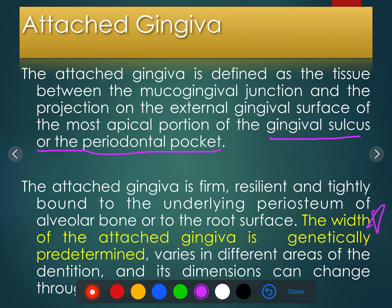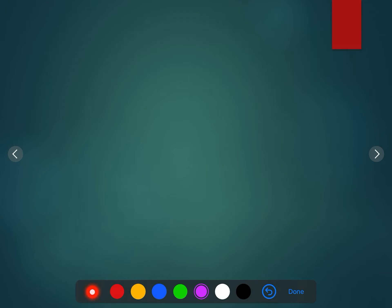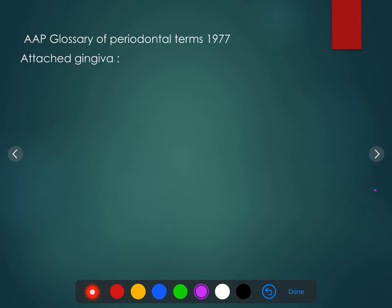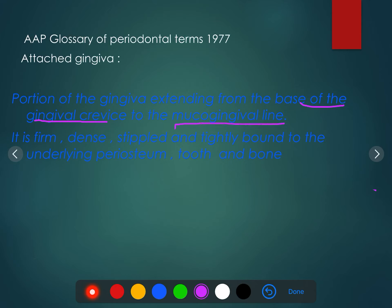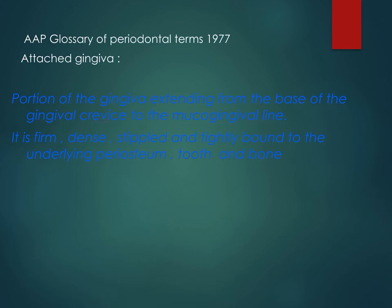It is a firm and resilient structure. The width of attached gingiva is genetically predetermined. The AAP has defined it as a portion of the gingiva extending from the base of the gingival crevice to the mucogingival line. It is firm, dense, stippled, and tightly bound to the underlying periosteum, tooth, and bone.